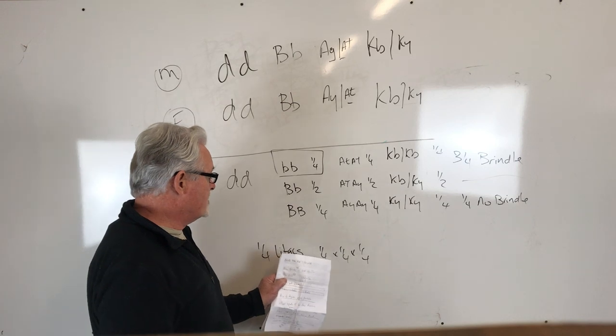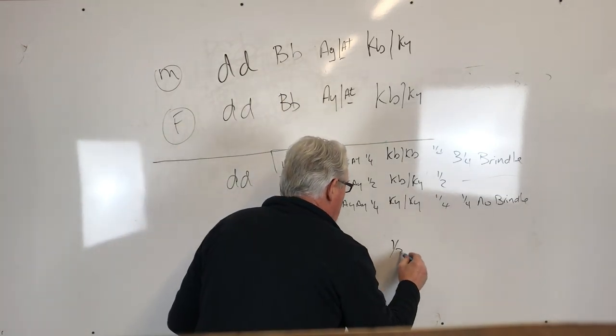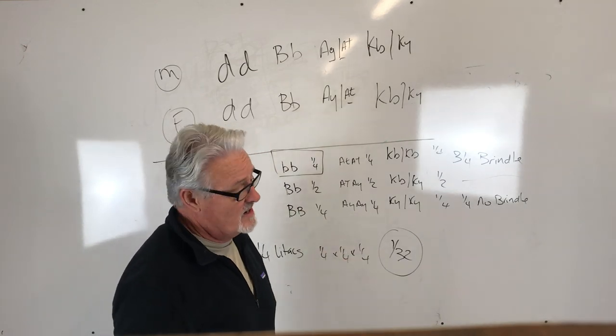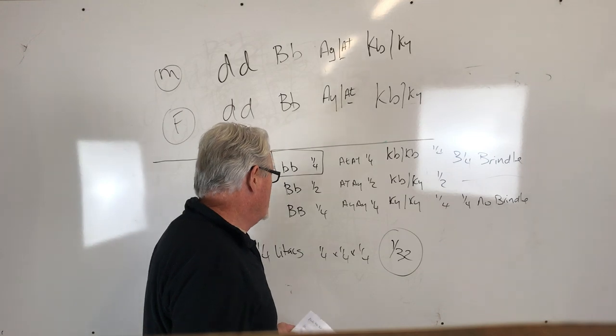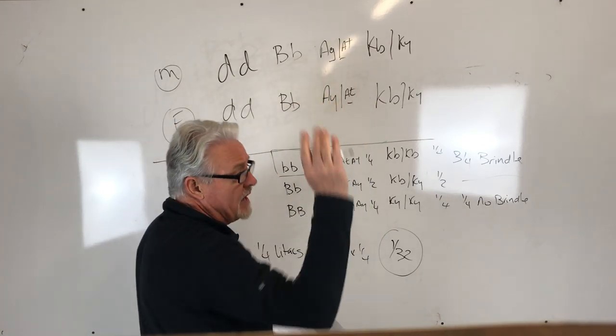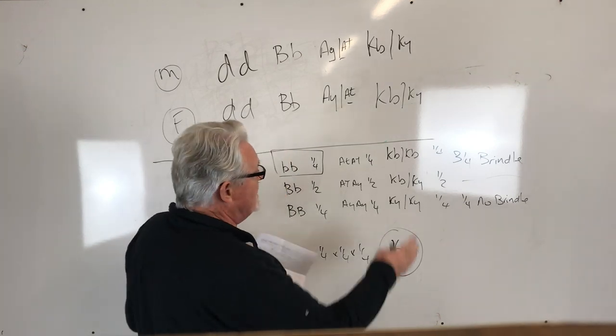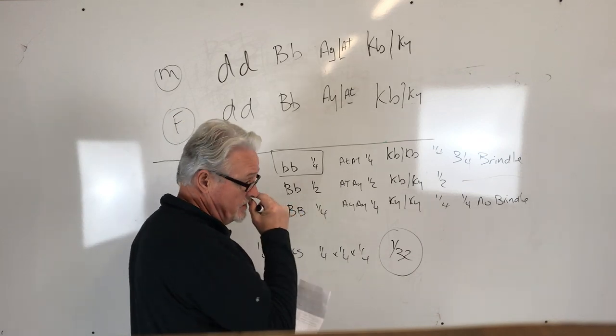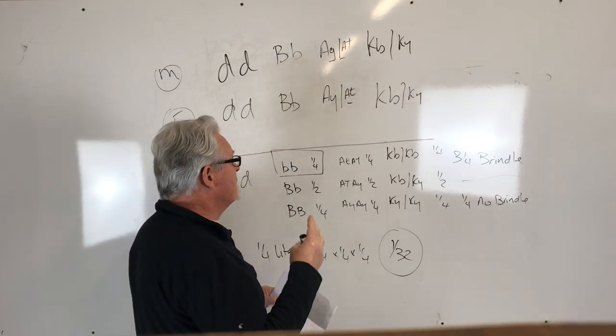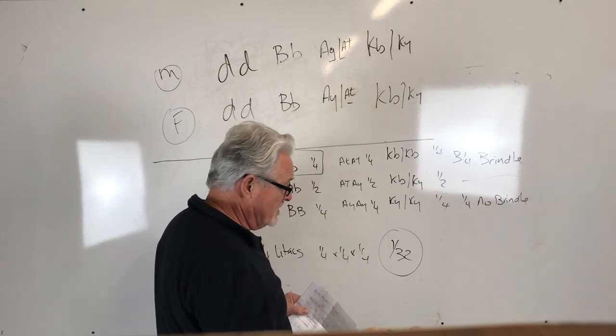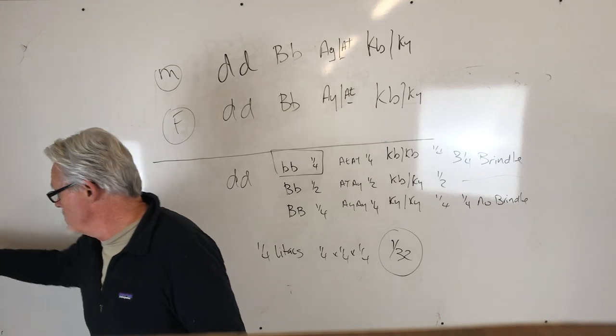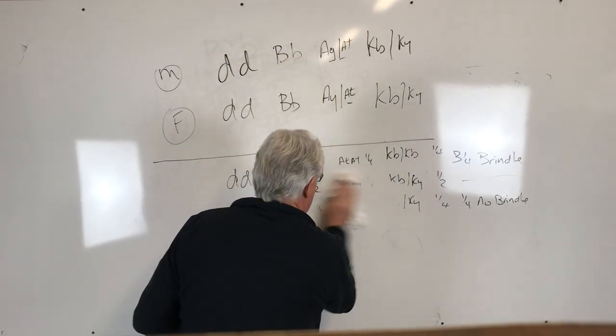So you can see the chances of that happening are only like one in 64. A quarter and a quarter would be a sixteenth, and a sixteenth times four would be one thirty-second. So only one thirty-second of the time would you expect to get what you really want, which would be a lilac dog with full tan points and no brindle. Are you going to get it? Probably not, unless you get really lucky with a big litter. Out of this breeding, you'd expect to get blue dogs most of the time that carry chocolate and carry a copy of brindle. That's what you'd expect to get most of the time.